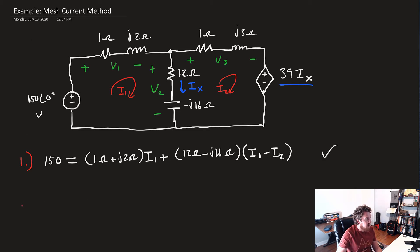Let's take a look at equation number two. We'll go ahead and start with, there's no source, and the dependent source is facing the wrong direction, so we're going to say 0 equals, let's just start there, 39 I sub x.